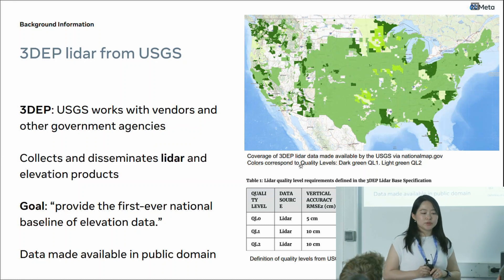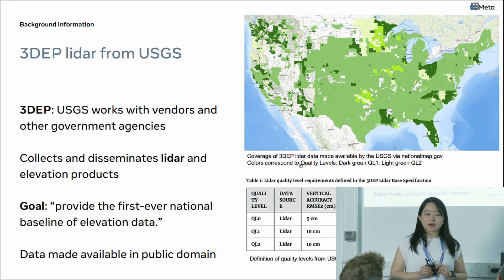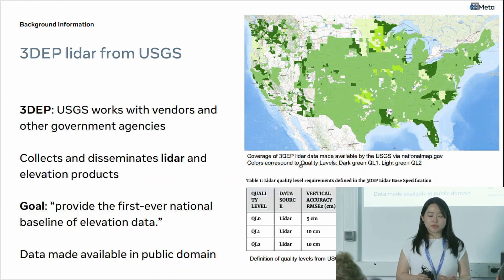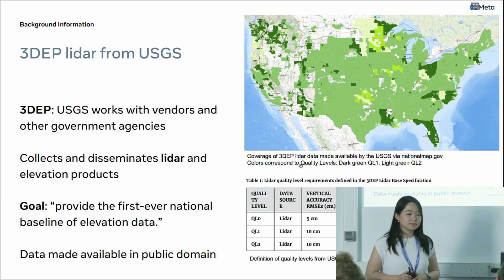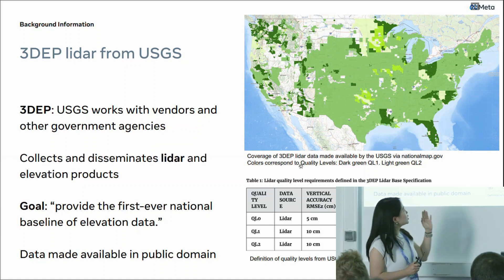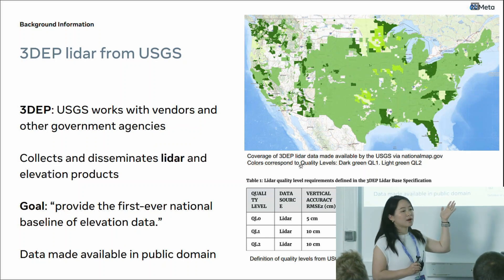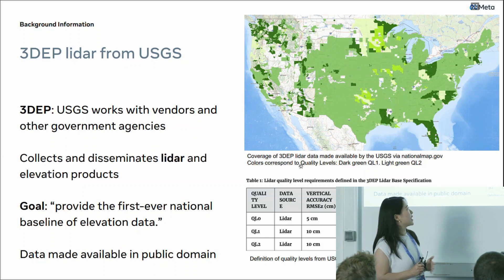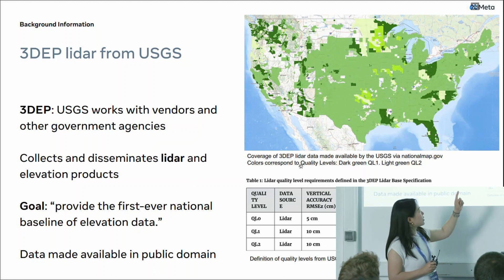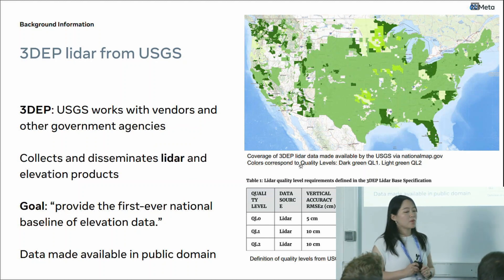They also use the word units to scale the coverage. A word unit can refer to a city, a city and its surrounding area, or a county. On this map here, it shows the distribution of different quality levels. The light green covering most of the country is quality level two, whereas the very dark greens are quality level one.